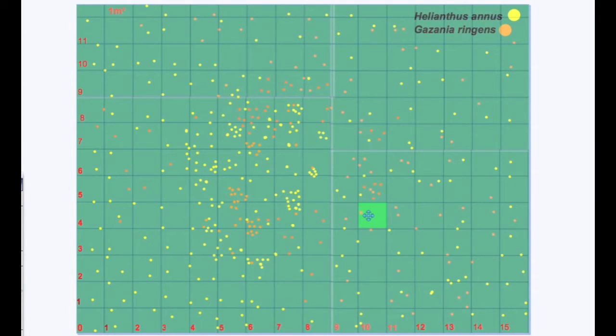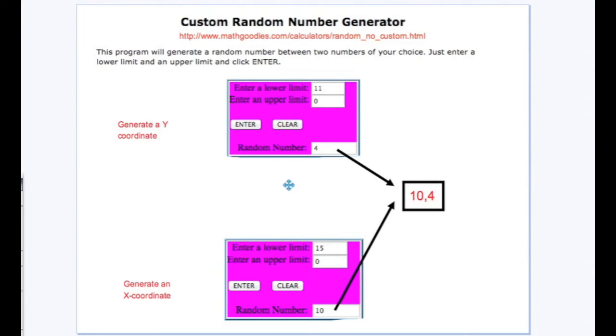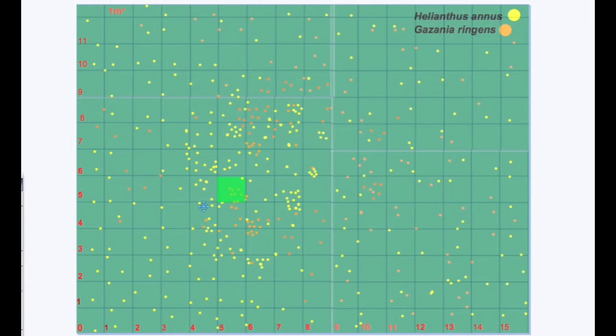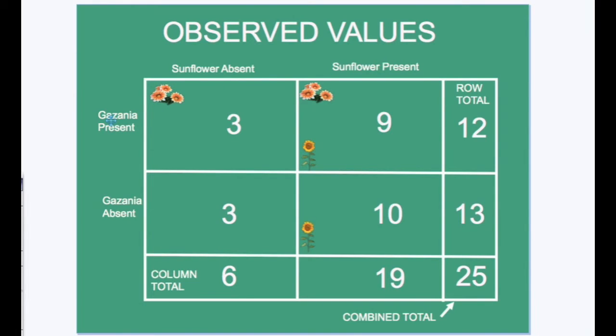So the student would note that Gazania was present but sunflowers absent. In this way they would begin to fill out this 2x2 contingency table with the first check going into this box. They would then go on to generate some more random coordinates and to determine whether Gazania and sunflower are present together and to determine what box to check on the contingency table. A minimum of 20 trials is required for the validity of the statistical significance test, the chi-squared test. After taking 25 random samples, this is what the contingency table looked like. Here you can see the combined total of 25 for the 25 samples taken from the ornamental plot.